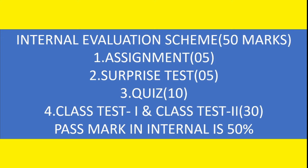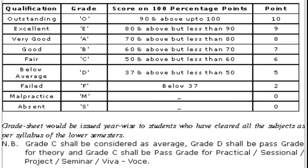Your internal examination is handled by your college — your college teacher will assess 50 marks and pass mark is 25. Once you clear internal, you go to the semester examination. The grade scale is: O grade is 90 and above up to 100; E grade is 80 to 89; A grade is 70 to 79; B grade is 60 to 69.